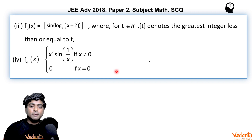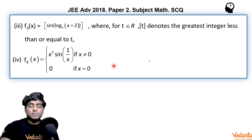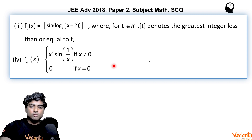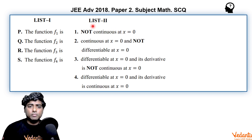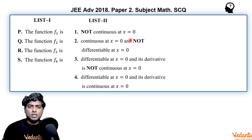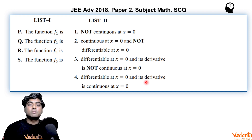f4 is a commonly seen function in the chapter on limits, continuity, and differentiability — generally presented as an example of a function which is differentiable at x = 0 but whose derivative is not continuous at x = 0. We will discuss this in detail. There are two lists: List 1 has the four functions, and List 2 has properties: not continuous, continuous but not differentiable, differentiable but derivative not continuous, and differentiable with continuous derivative.